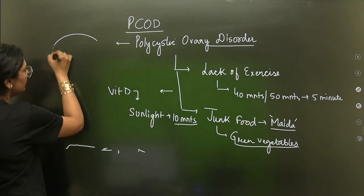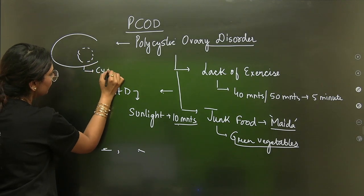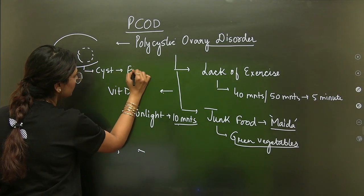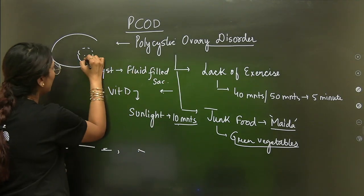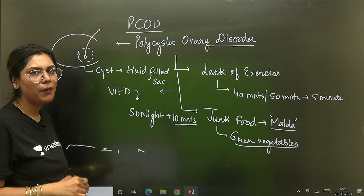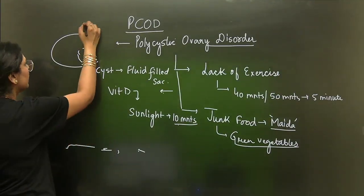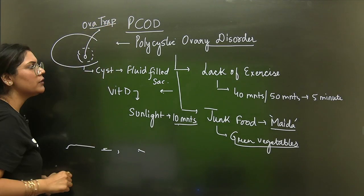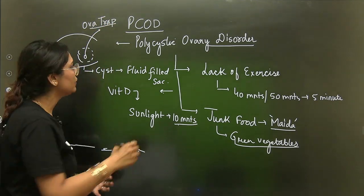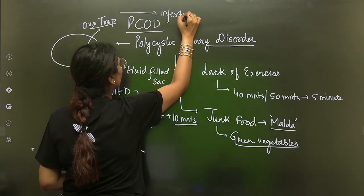What happens is that the ovary starts to become a cyst. Cyst is nothing but a fluid filled sac, which can also lead to infertility in the future. Infertility can be a major reason.